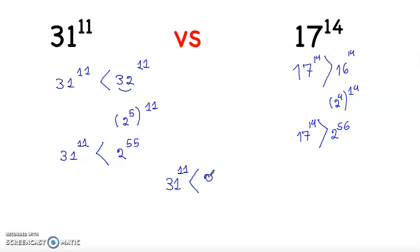Now we have 31 to power 11 is smaller than 2 to power 55, and we know that 2 to power 55 is smaller than 2 to power 56. And 2 to power 56 is smaller than 17 to power 14. So we can say that 31 to power 11 is smaller than 17 to power 14.